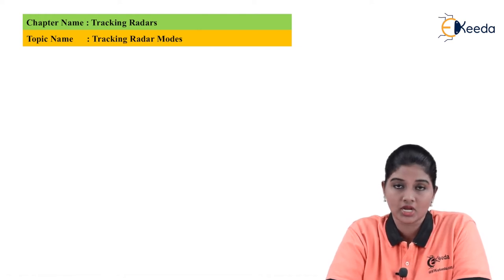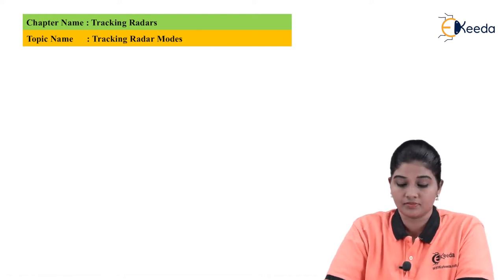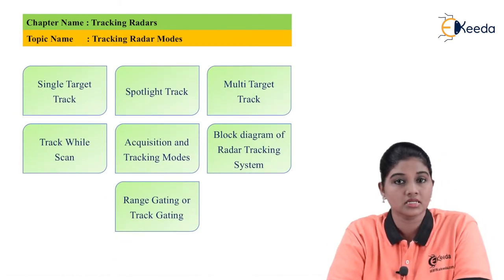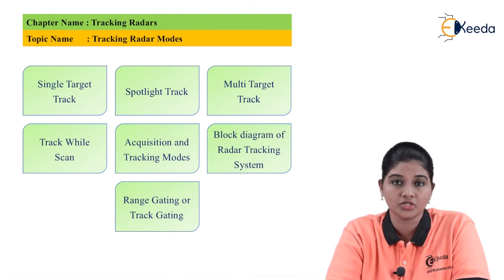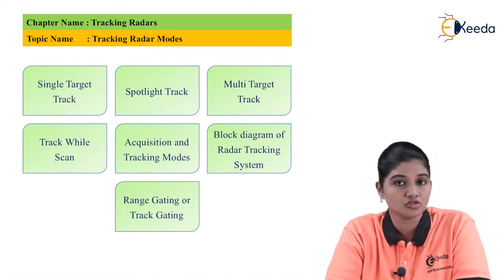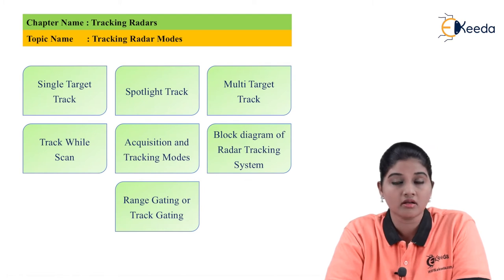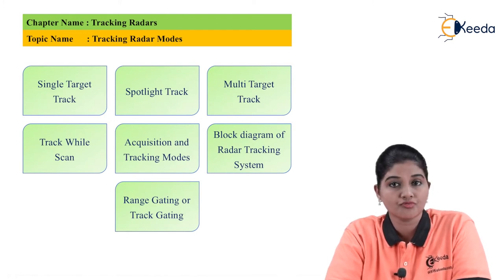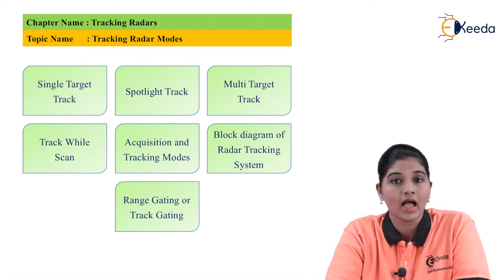The first mode of radar is single target track. In single target track there is only one object — the radar is used to search only one object. It continuously scans the position of one object only and ignores all other objects. In single target track radar, the rate at which the target is sampled is equal to the pulse repetition frequency, which is the maximum number of pulses present at the output, providing the unambiguous range for range as well as Doppler shift.